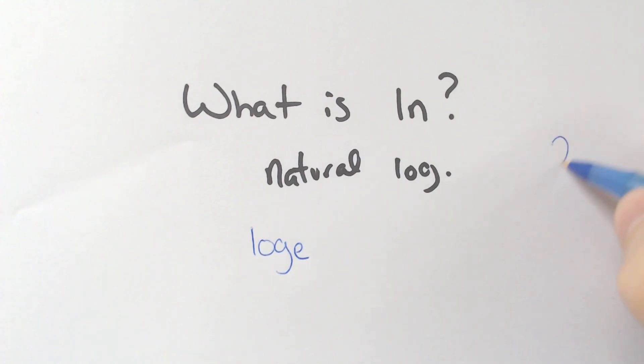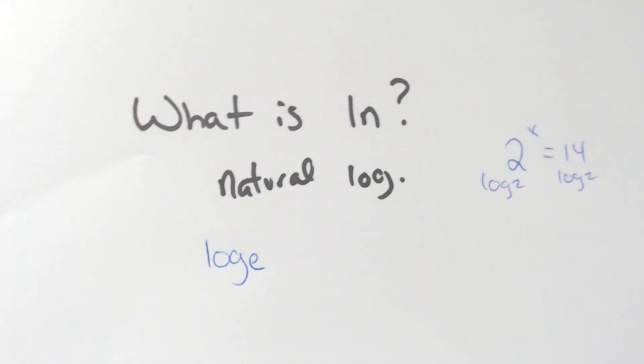So when you're solving things like this, 2 to the x is equal to 14, you would log base 2 both sides to get rid of it.